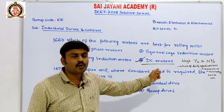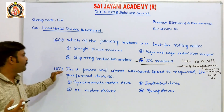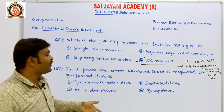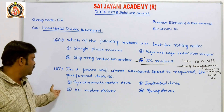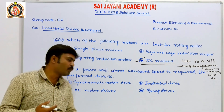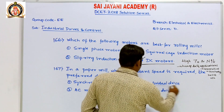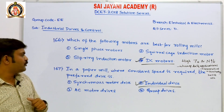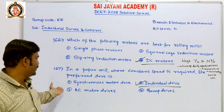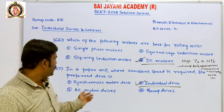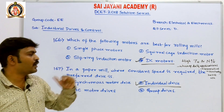Question number 167 says: in a paper mill where constant speed is required, the preferred drive is — first option, synchronous motor drive; second option, individual drive; third option, AC motor drives; fourth option, group drives. Where constant speed is needed, we usually use individual drives. The paper mill also needs constant speed. So it uses individual drives. Synchronous motor drives, AC motor drives, and group drives are not required for constant speed applications. Option two, individual drives, is the right answer.